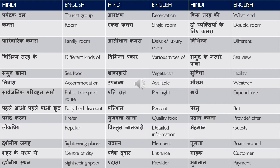विभिन्न — different. विभिन्न तरह के — different kinds of. विभिन्न प्रकार के — various types of. There is a slight difference: तरह means kind and प्रकार means type. समुद्र के नज़ारे वाला — that is sea view. समुद्र के नज़ारे वाला कमरा चाहिए — that is sea view room. And समुद्र के नज़ारे का हमें आनंद लेना है — we want to enjoy the sea view, so we want a sea view room.